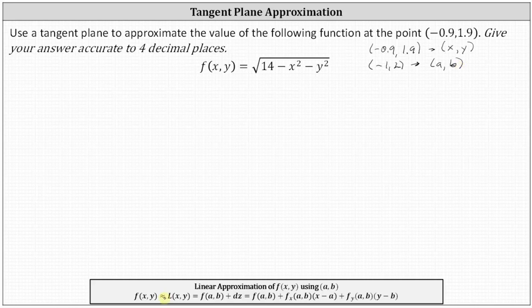f(x, y) is approximately equal to L(x, y), where L(x, y) is the linear approximation or tangent line approximation. This equals f(a, b), the function value at the convenient point (-1, 2), plus differential z — the change of z along the tangent plane — where differential z equals the partial of f with respect to x at (a, b) times (x minus a), plus the partial of f with respect to y at (a, b) times (y minus b).